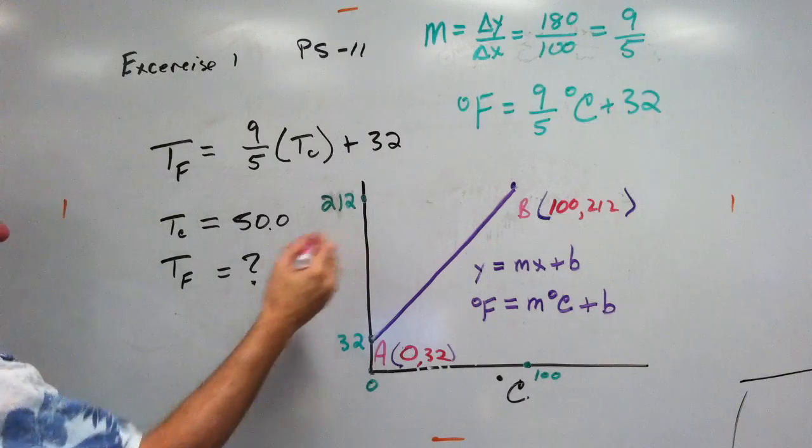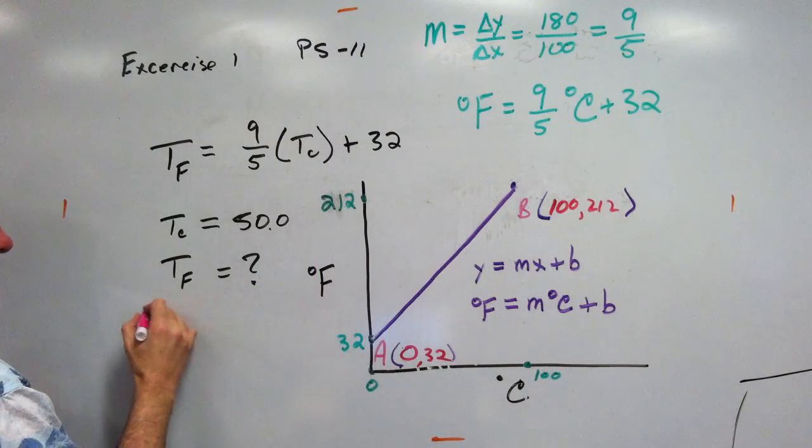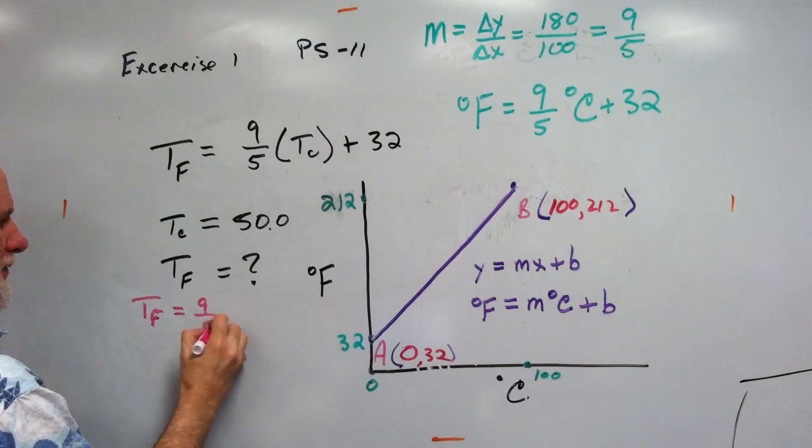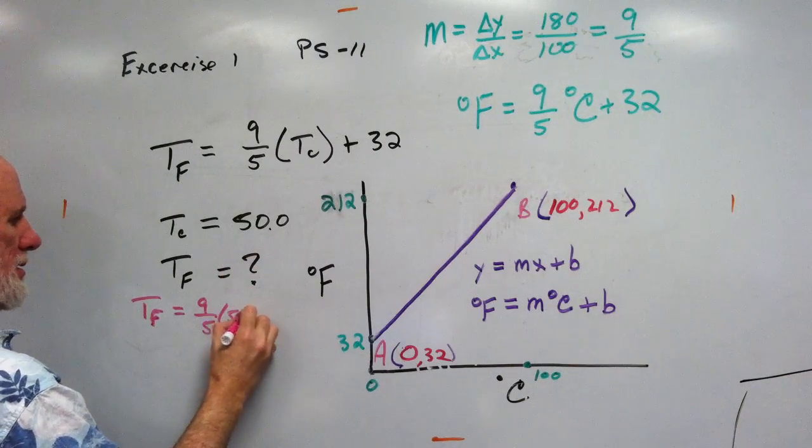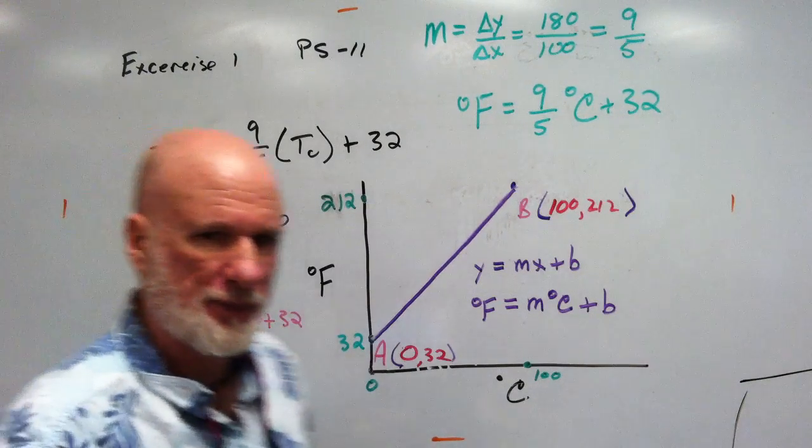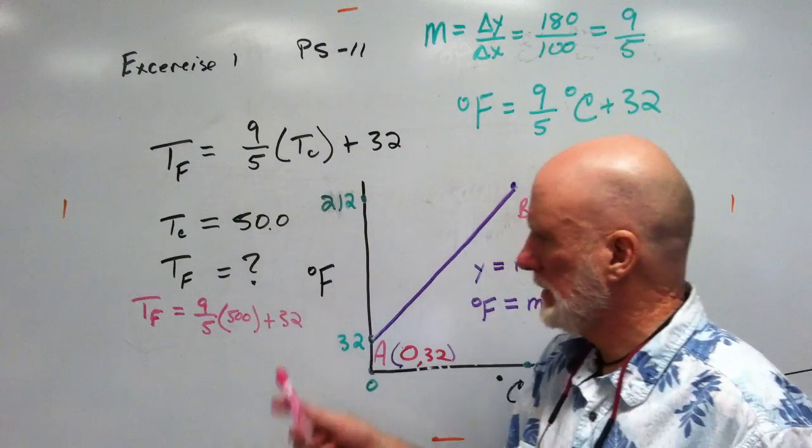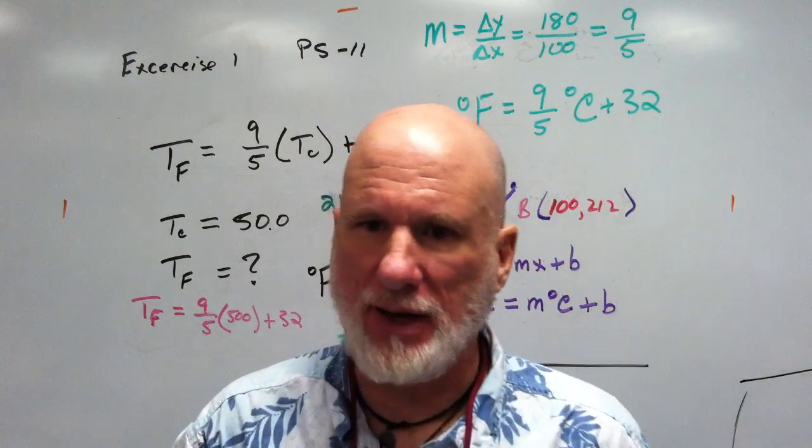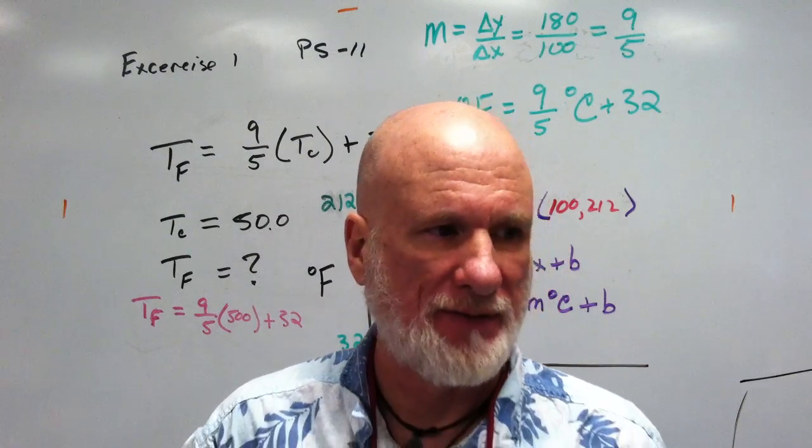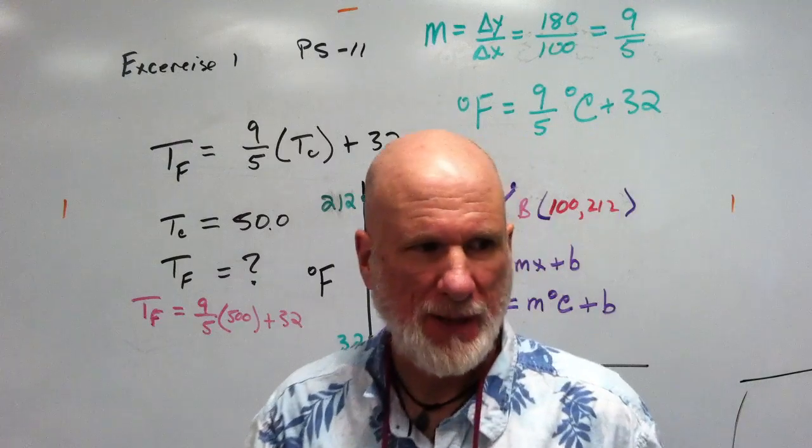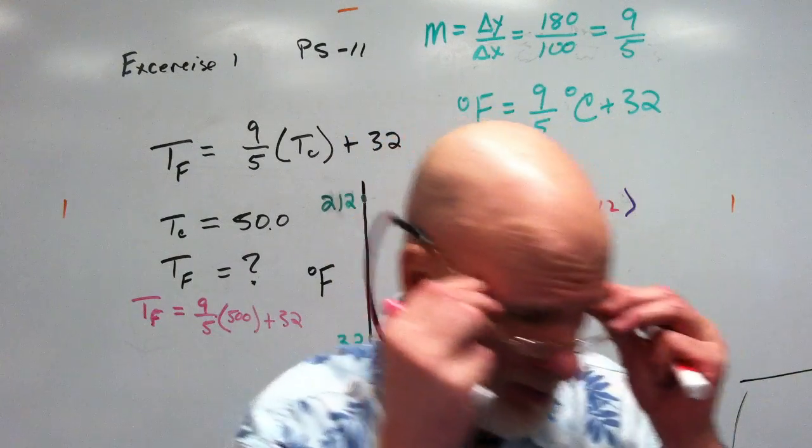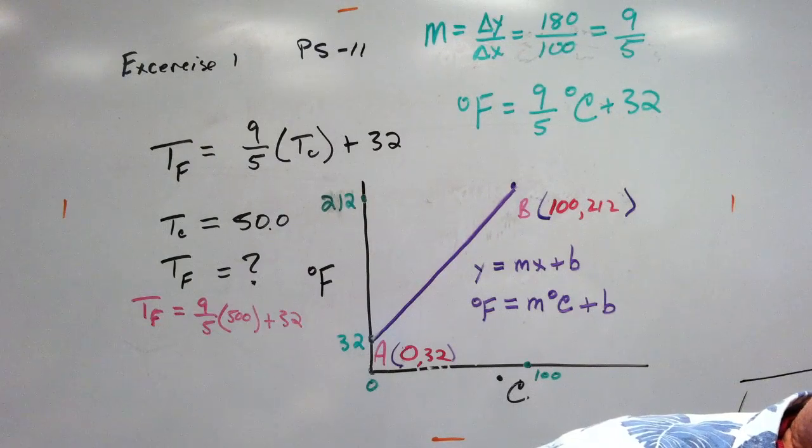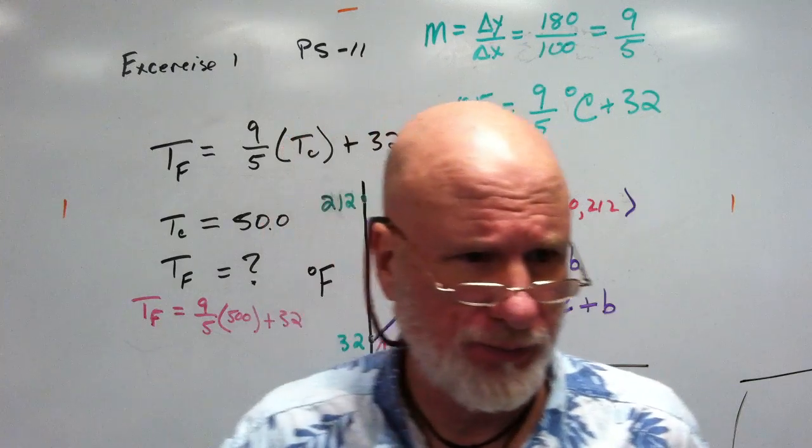All right. So it's going to be TF equals nine-fifths times 500 plus 32. Do that. How do you do that anyway? Is that easy? Nine times 500 divided by 5 is what? Nine times 500 is 4,500. Divide it by 5 is what? 900 plus 32. What is it? 932. Wait, what? 932. You know what? All right. 932.